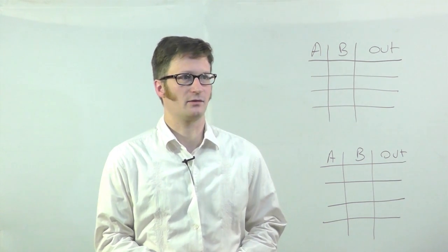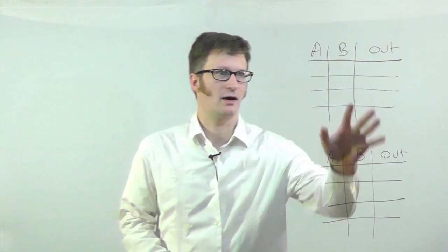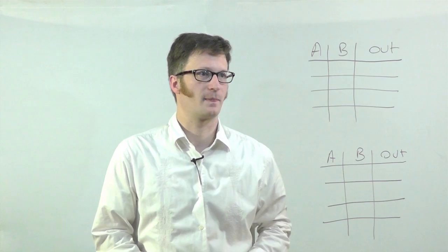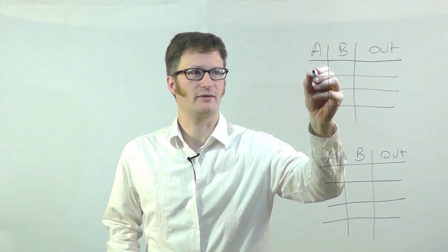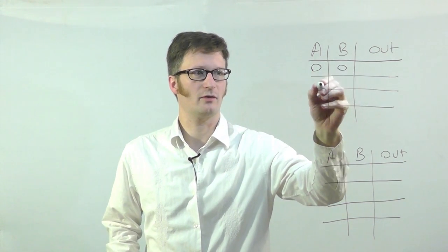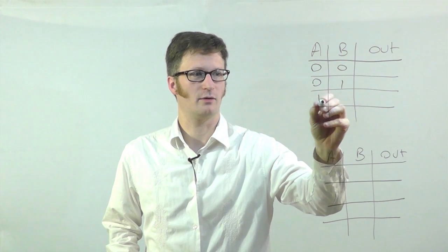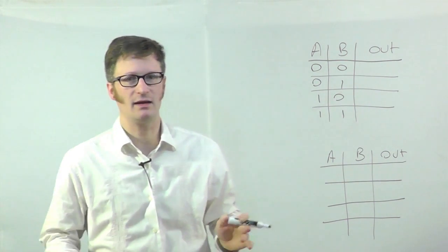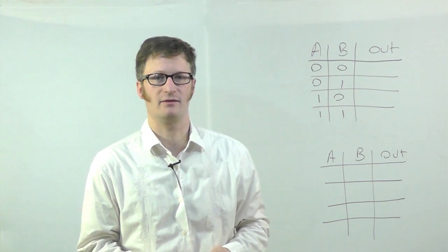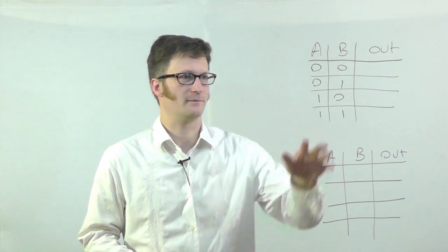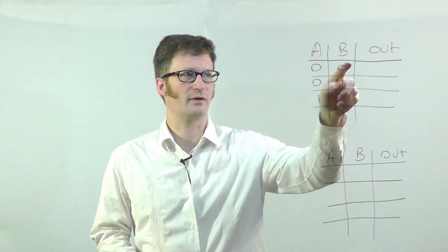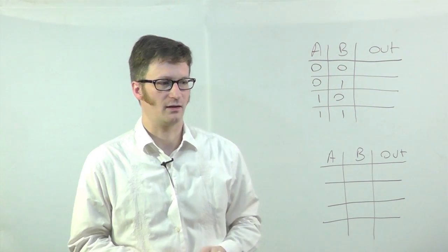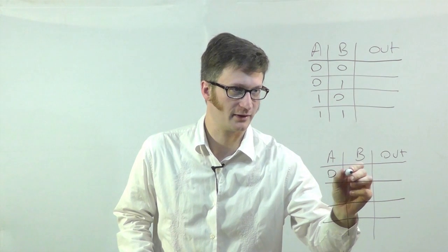Let's take a look at a truth table here. This is a two-input truth table, one output, and the inputs are 0,0 / 0,1 / 1,0 / 1,1. For any digital logic gate that could take two inputs, if these are the inputs, this would determine what the output would be. I'm just going to fill in this one really quickly.